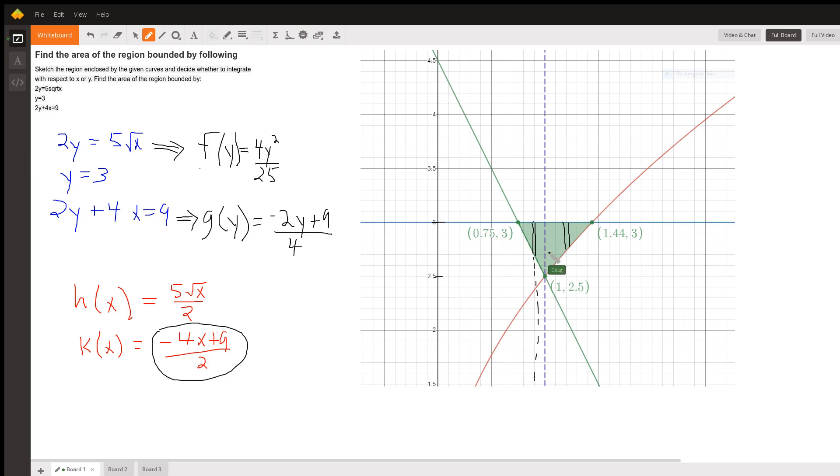But then when we get to this side of 1, we have to go from 1 to 1.44, and we have to use top is still y equals 3, but the red curve is y equals 5 radical x over 2.